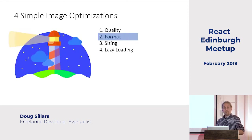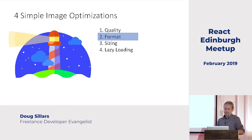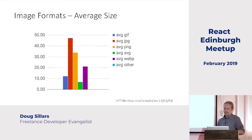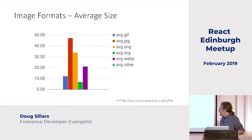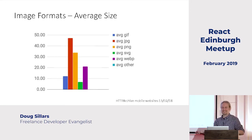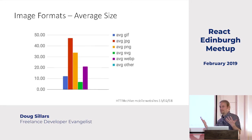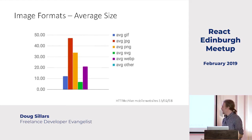I'm going to talk about format next — the different formats you can save images in. Here are the different average sizes from the HTTP Archive. JPEGs are generally the biggest, also because there are a lot more JPEG images on the internet — some are big, some are small.